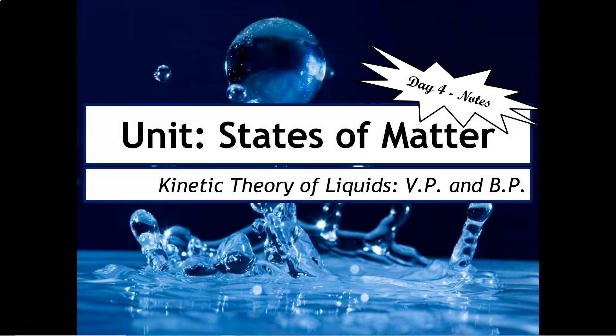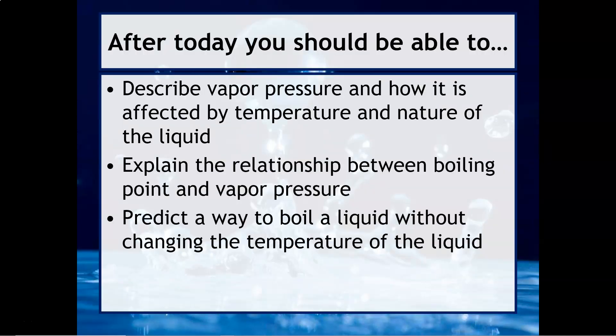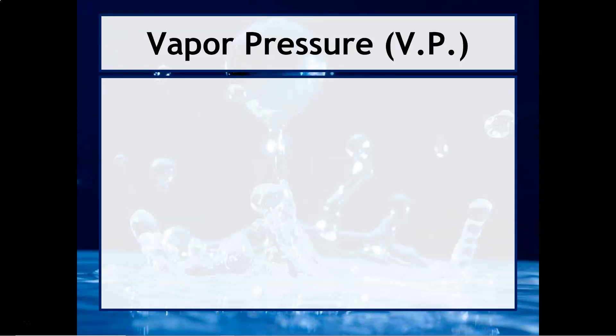Hi chemists, welcome back. Last video we primarily focused on properties of liquids. We're now going to talk about more properties, however we're going to focus on something called vapor pressure, abbreviated V.P., and boiling point, abbreviated B.P. At the end of this video you should be able to describe vapor pressure and how it is affected by temperature and the nature of the liquid, explain the relationship between boiling point and vapor pressure, and predict a way to boil a liquid without changing its temperature.